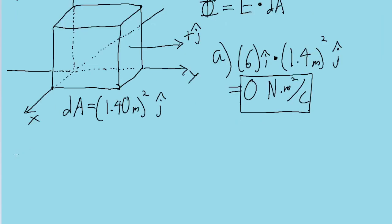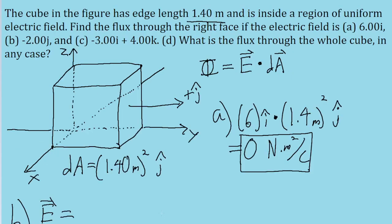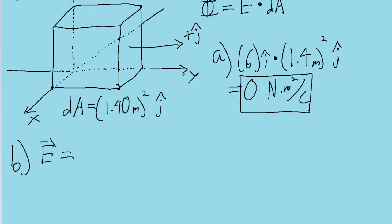Now let's take a look at part b, where the electric field that we're given is negative 2 with the j hat unit vector. So negative 2 j hat. So the flux for this part of the problem, the flux for part b, is going to be negative 2 j dotted with 1.4 j.